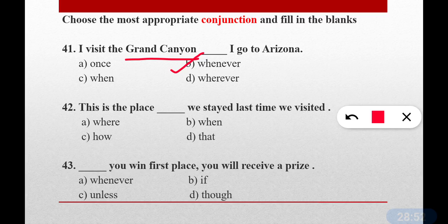Question number forty-two: This is the place dash we stayed last time we visited. Here we use 'where'. This is the place where we stayed — option B is the correct answer.